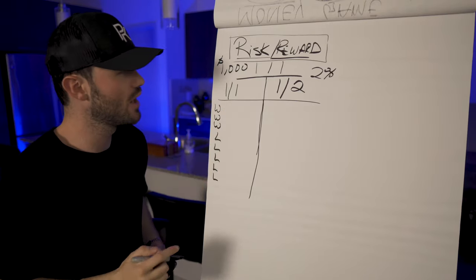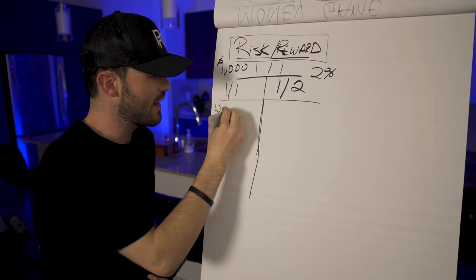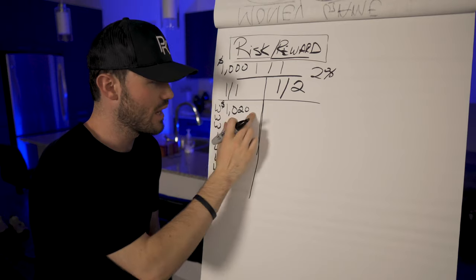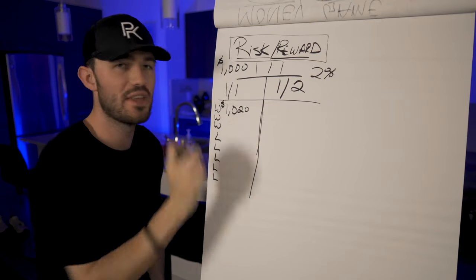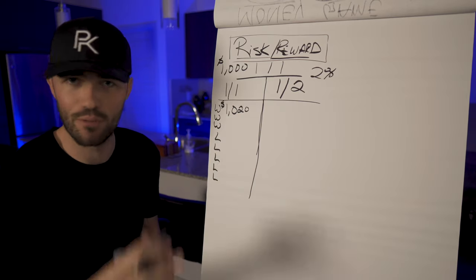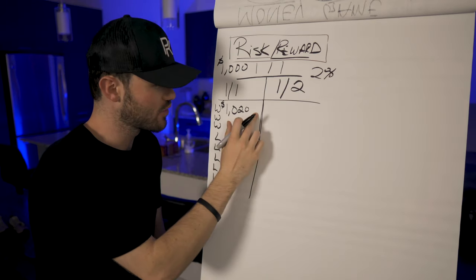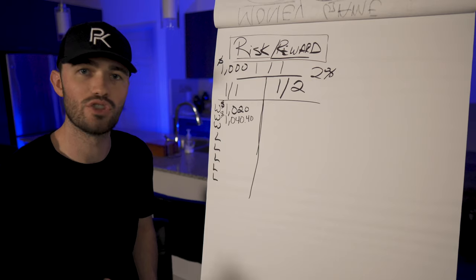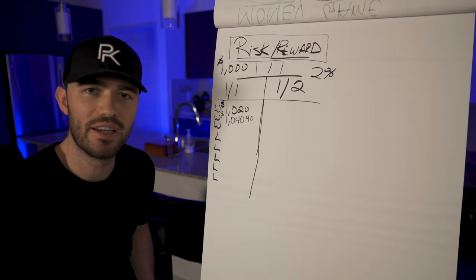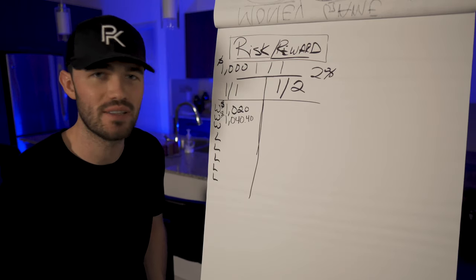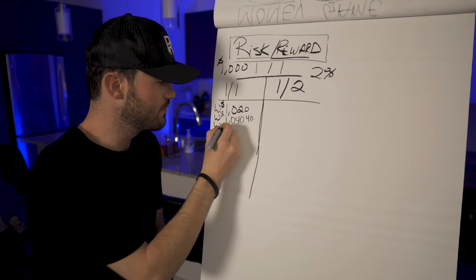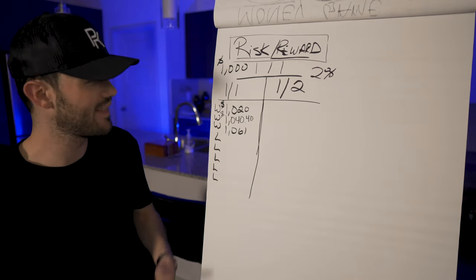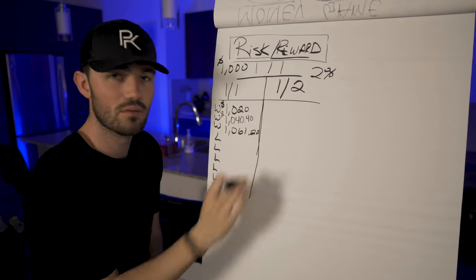Under the one-to-one scenario, winning the first trade gives us an account balance of one thousand twenty dollars — that's the two percent gain, compounding forward. Winning the second trade brings us to one thousand forty dollars and forty cents. After the third win, we're at approximately one thousand sixty-one dollars. We've won three trades and we're up over four percent on the account.